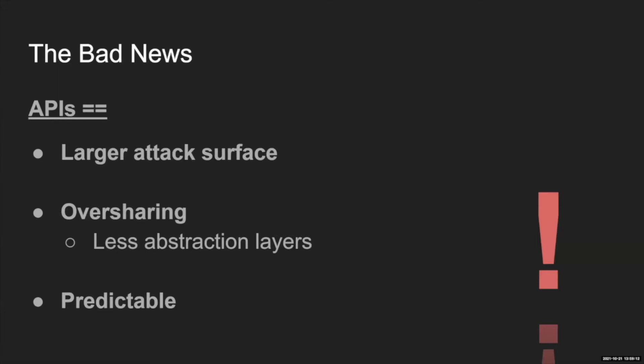APIs are also much more over-sharing — there are fewer abstraction layers between clients and servers. It makes it easier for developers to use APIs, but also easier for attackers to understand the business logic just from the traffic itself. APIs are more predictable because the REST and GraphQL standards encourage developers to build APIs in a generic, predictable way, which makes the attack surface even larger.